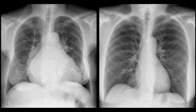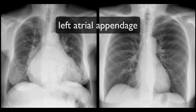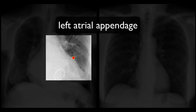The final sign of left atrial enlargement we'll be discussing on the frontal radiograph is bulging of the left atrial appendage. Normally the left atrial appendage contributes to a flat, or slightly concave, upper aspect of the left heart border. When enlarged however, the left atrial appendage creates a discrete, convex bump.